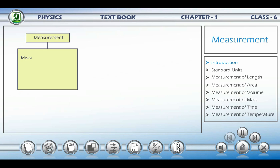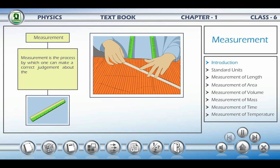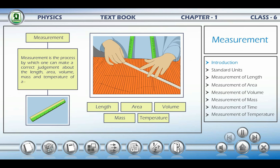Measurement is a process by which one can make a correct judgment about the length, area, volume, mass and temperature of a given object.